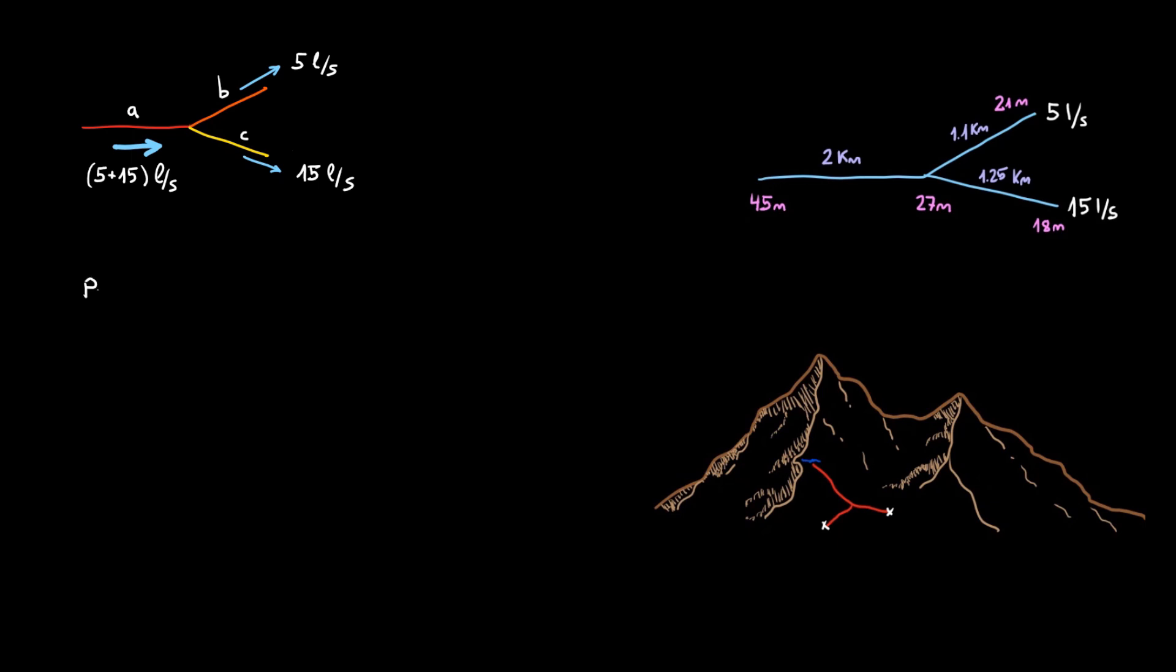So let's crunch the numbers for this particular system. We start sizing the upstream pipes. Step 1 is to find the maximum head loss for the stretch of pipe. Elevation difference, minus 10 meters of safety margin, over 2 kilometers. We need values lesser than 4 meters per kilometer.